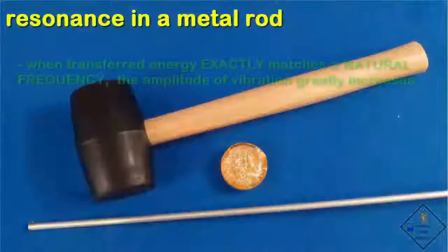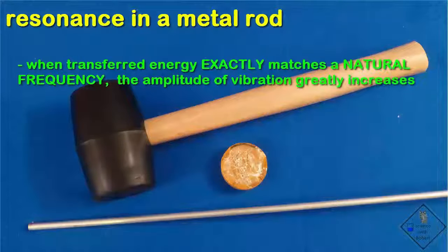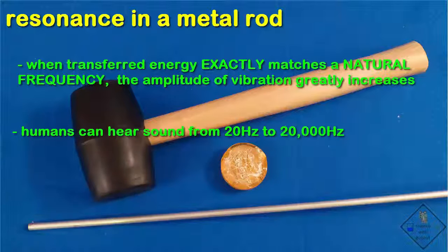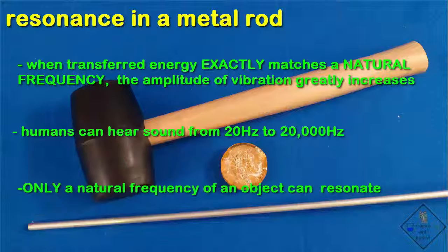When an object is struck, plucked, or rubbed, it may begin to resonate. Resonating objects vibrate and create audible sound if the frequency of vibration is within the range of human hearing. You cannot get objects to vibrate at any frequency. Only their natural or resonant frequency.